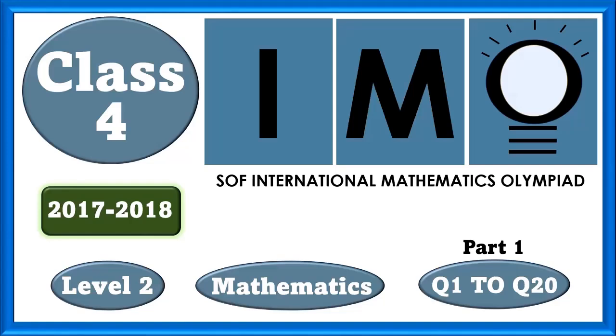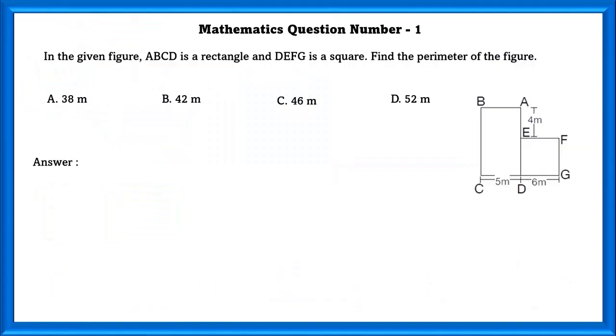Class 4 IMO Level 2. Mathematics question number 1. In the given figure, ABCD is a rectangle and DEFG is a square. Find the perimeter of the given figure.